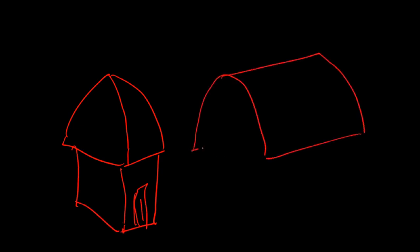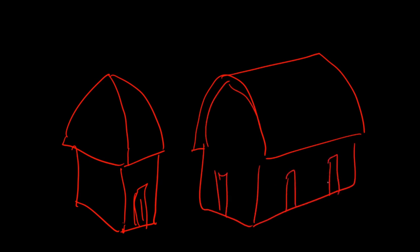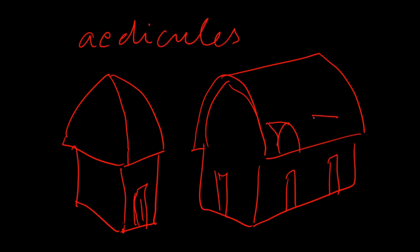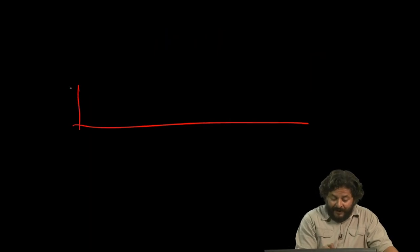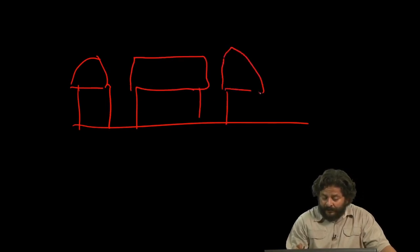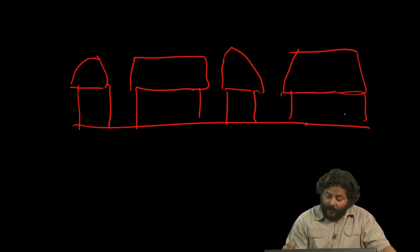A kuta is a small square hut — we shall see examples at Mahabalipuram — whereas a shala is a long, longitudinal hut. When these are made in miniature they are called edicules. Very often you will have dormer windows depicted on the shalas. In South Indian temples you will often have a kuta, a shala, a kuta, a shala in alternating bands, with the shalas marked by these dormer windows seen from the side.